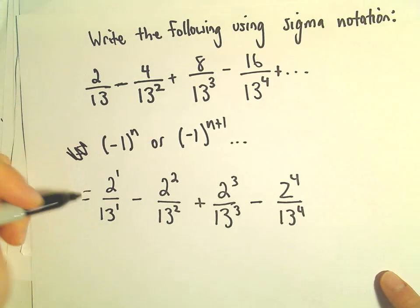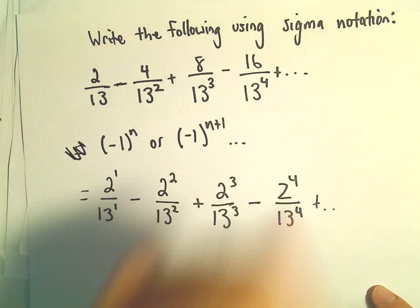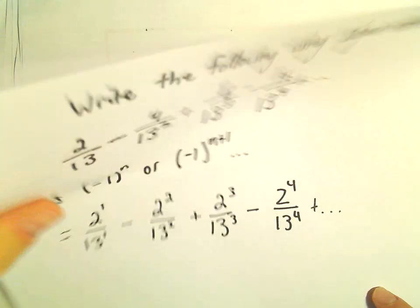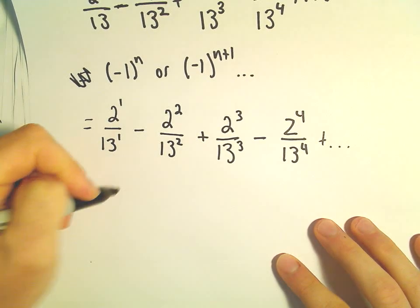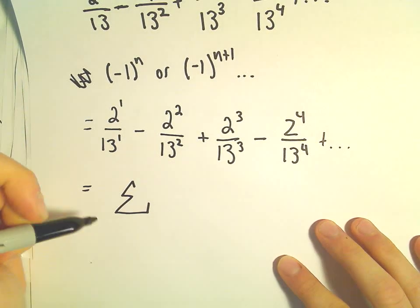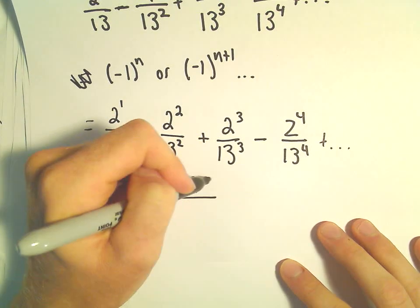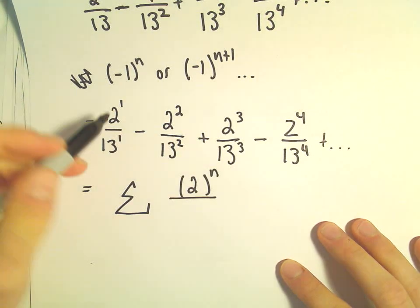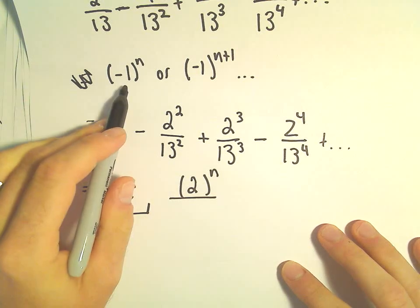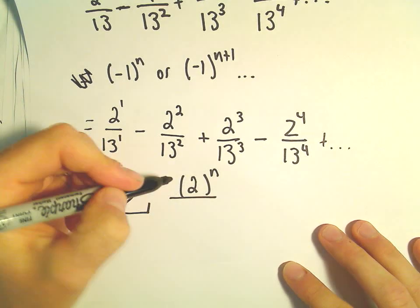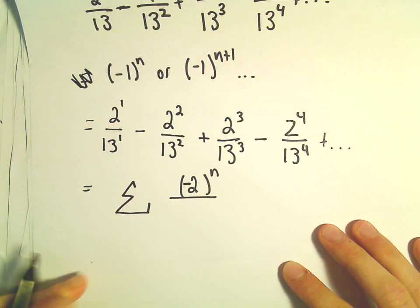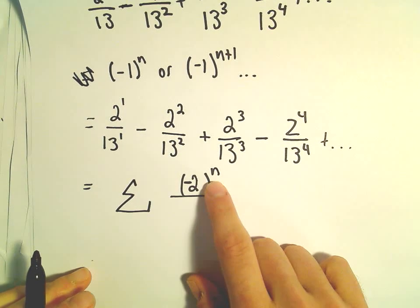So now it's starting to look like something where I can put in my series notation. We've got 2 to a power of n. For the alternating part, instead of having (-1)^n, we can just make it (-2)^n. Because again, as n increases, the sign will still alternate between positive and negative.